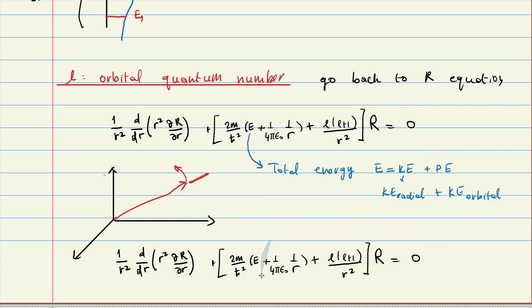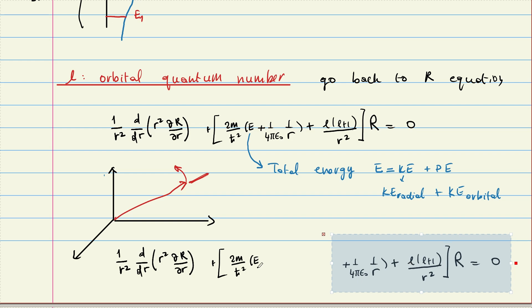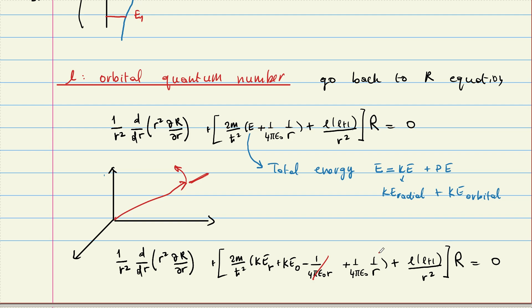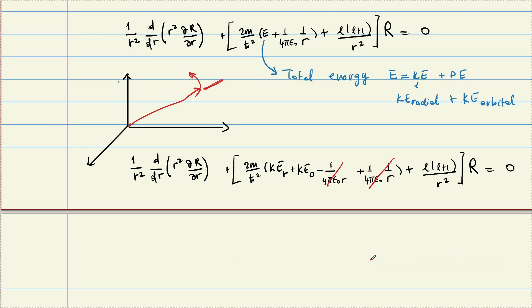Energy equals KE_radial plus KE_orbital, plus the Coulomb potential which is minus 1 over 4π ε₀ r. You can see this Coulomb term cancels nicely. And if I can get a similar cancellation for the orbital kinetic energy with the L(L+1) term, I'll be in good shape.